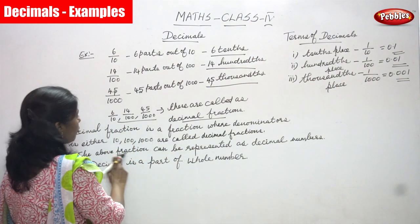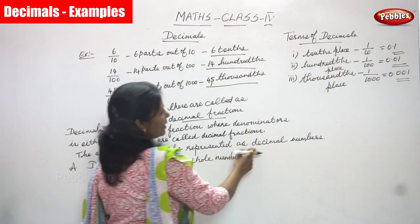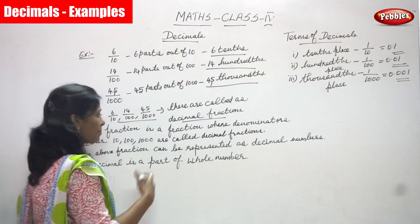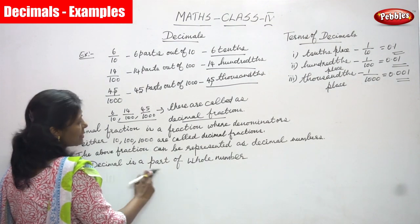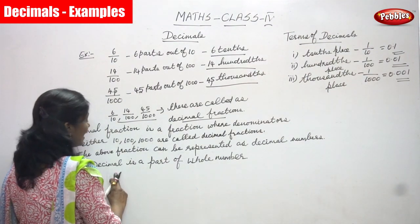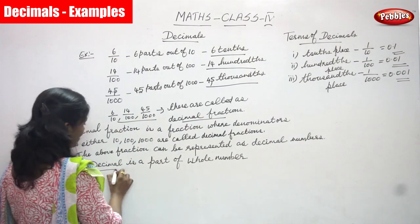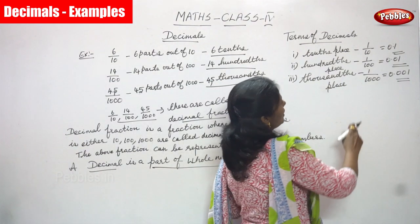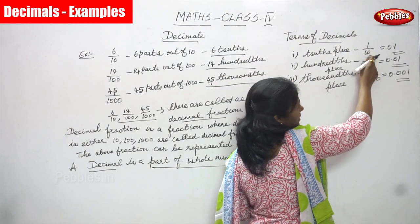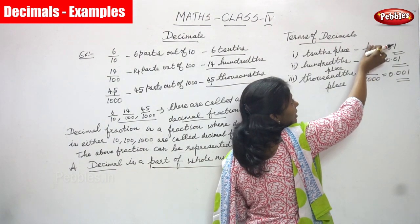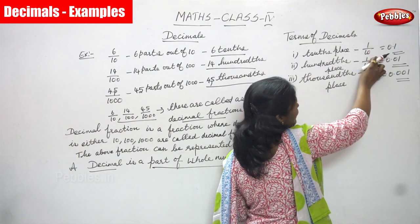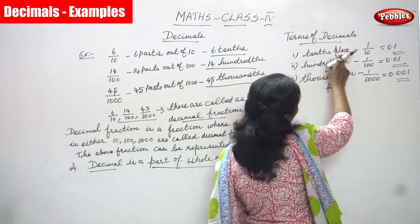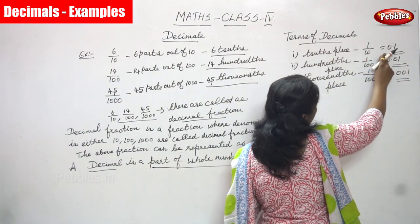The above fractions can be represented as decimal numbers. So these fractions are converted to decimal numbers. A decimal number is a part of a whole number — that is the meaning. It is a part of a whole number, so 10 parts — we write only one, 1 by 10, and that is the tens place.